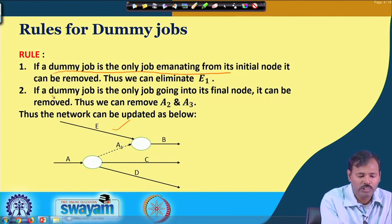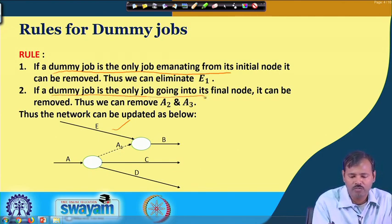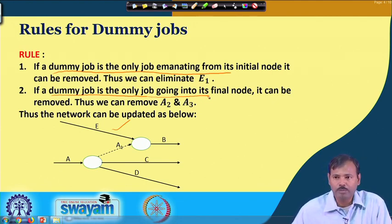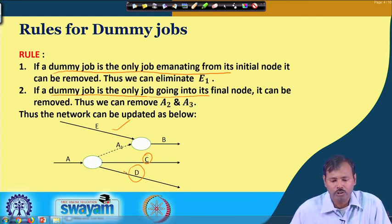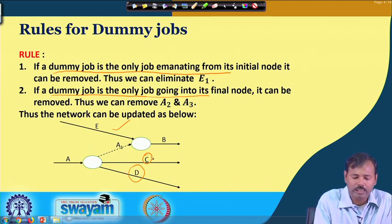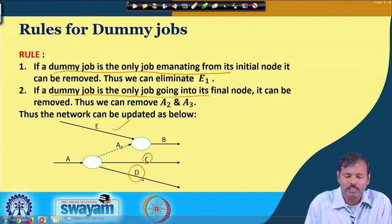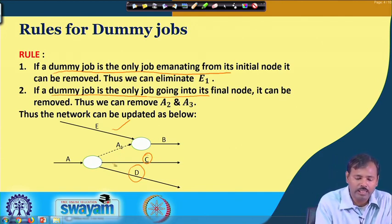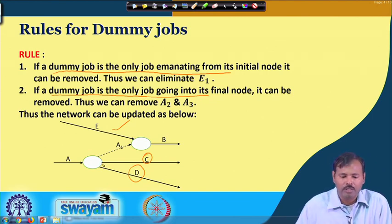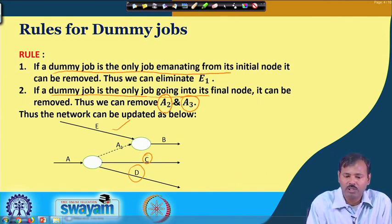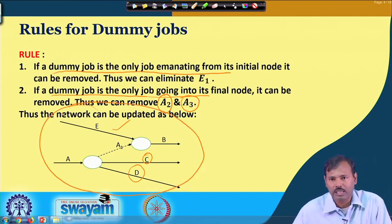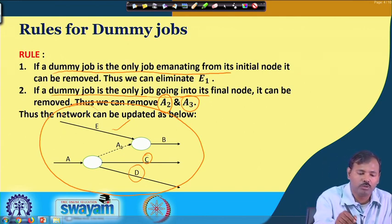Rule 2: If a dummy job is the only job going into its final node, it can be removed. For jobs C and D, the dummy jobs A2 and A3 are the only jobs reaching their final nodes. Therefore we remove those dummy jobs and directly connect C and D to the final node of A. This reduces the number of dummy jobs the computer needs to analyze, making computation faster.